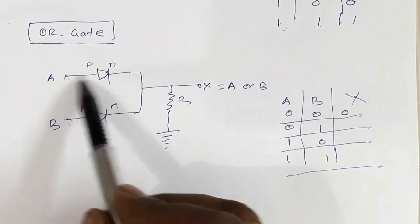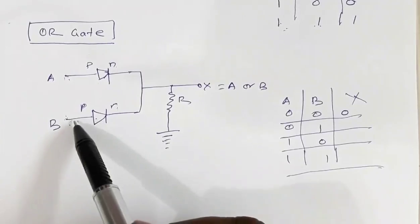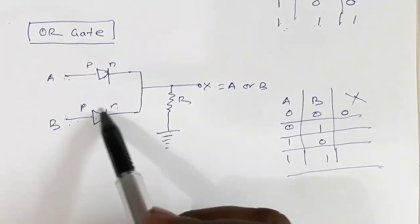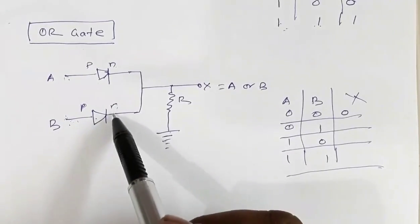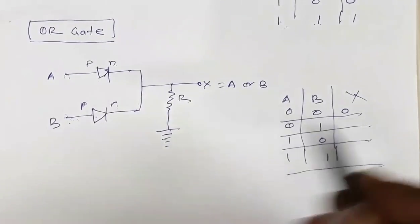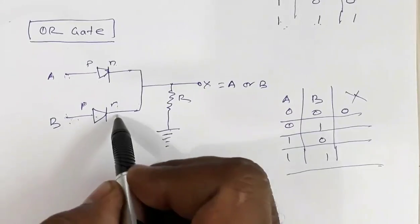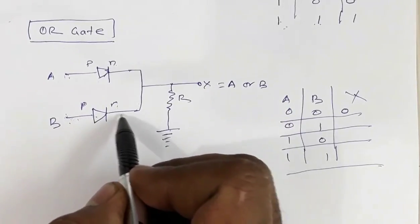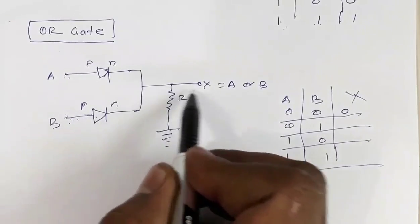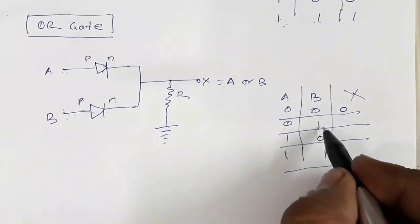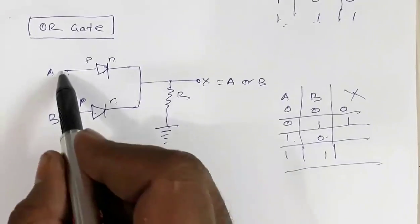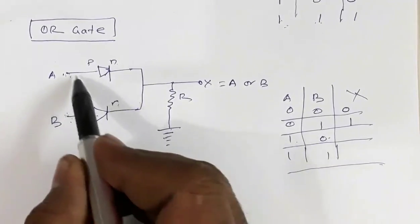Now suppose A is zero and B is one. If A is zero this diode will not work. But if B is one, the P side is getting high voltage and the N side is grounded, so this diode is forward biased. If this diode is forward biased, it offers zero resistance, so potential at B equals potential at X — there is no potential drop. So if B is one, output is one. Similarly, if A is one and B is zero, the diode connected to A is forward biased, so potential at A equals potential at X.